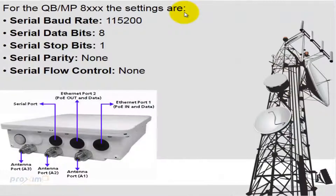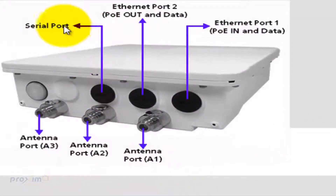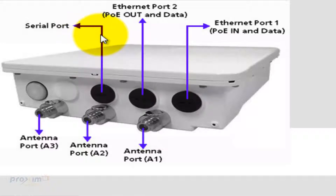Last but not least, we'll cover the QBMP8000 family — the 8100 and 8200. Just like the AP8800, the serial baud rate is 115200. Data bits is 8, stop bits is 1, and both parity and flow control are none. The serial port is located right here on the radio. If you have the connectorized version, you can see the connectors down here; if you have the built-in antenna version, it'll still be all the way up at the top. Looking at it face-up, it's going to be the connector on the left.